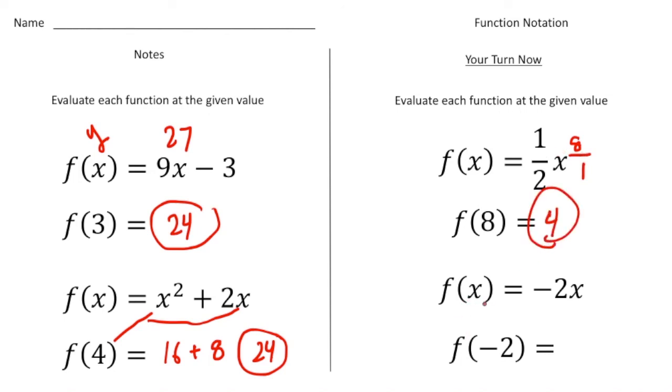And then finally here we have f of x equals negative 2x. Well, if I plug in a negative 2 for the x, negative 2 times negative 2 is a positive 4. And there's the answer for that one.